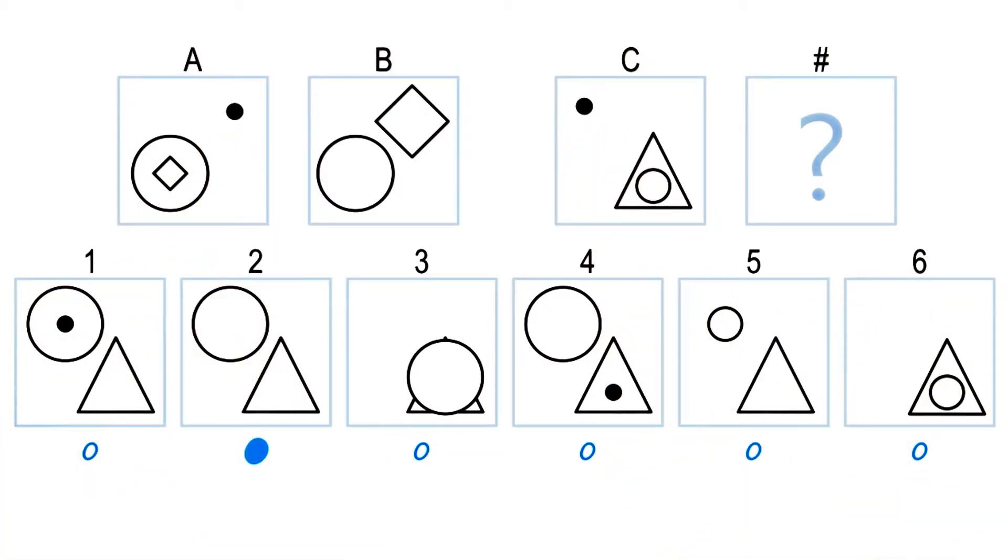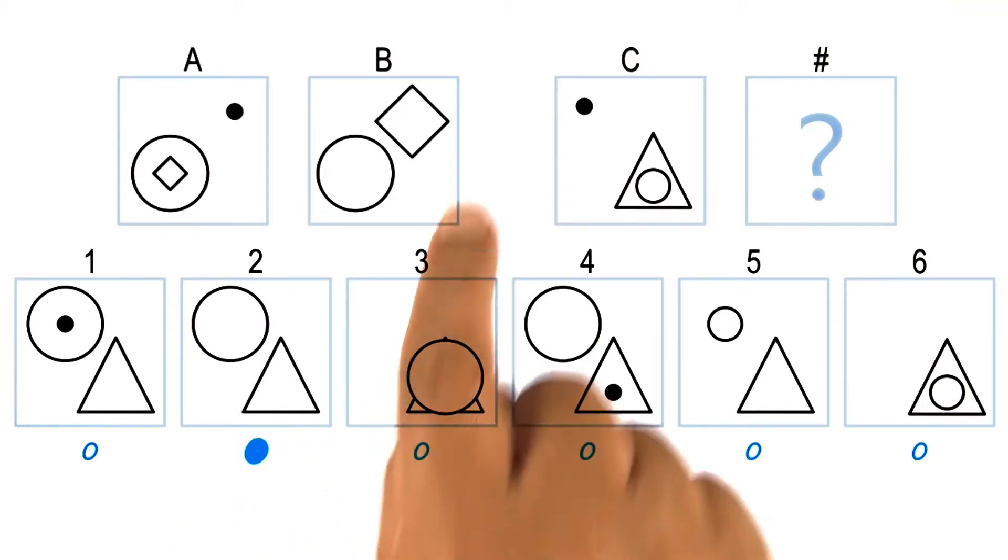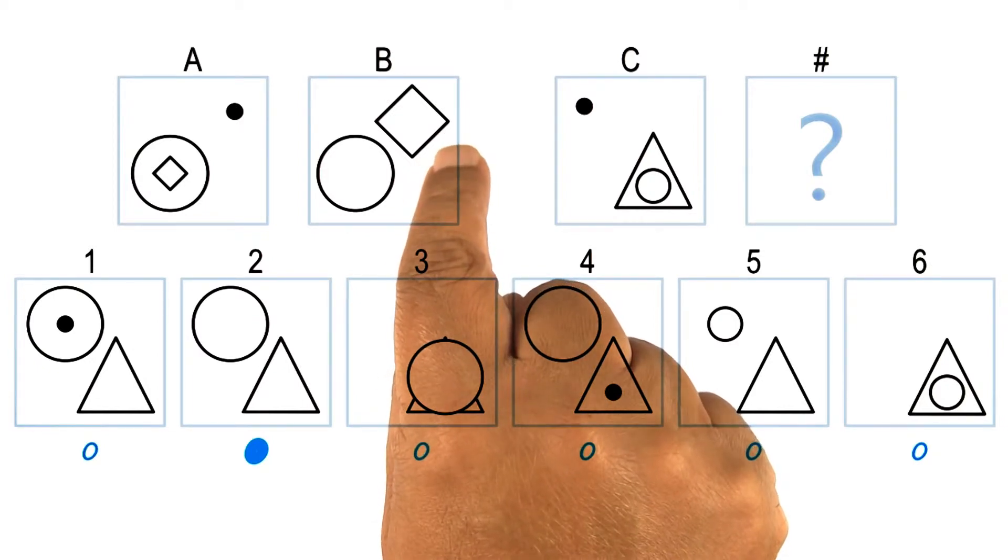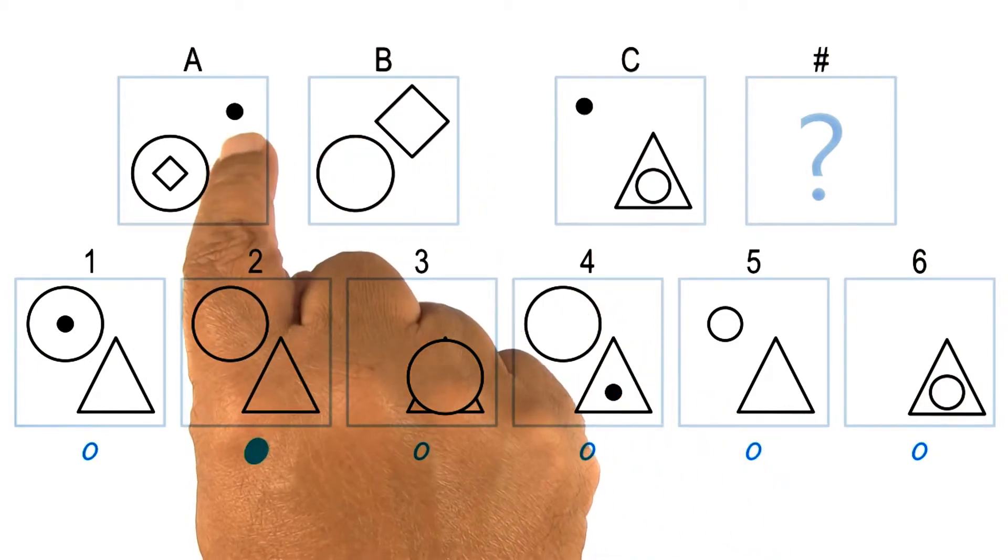Two seems to be the right answer, David. Notice that the circle in two is on the left of the triangle, even though the diamond in B was on the right of the circle. That is okay because the diamond is replacing the dot here.